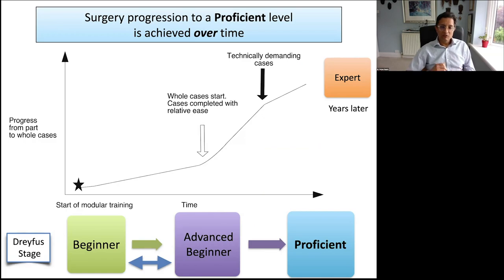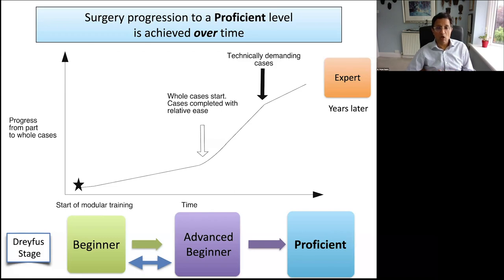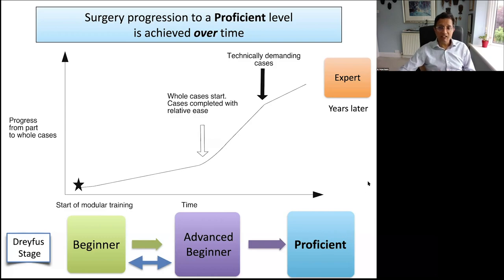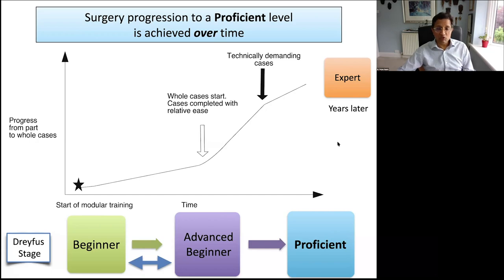It's important to realise where you are in your training. There is the novice who's never done surgery; the beginner who can do various parts but can't do a whole operation; the advanced beginner who can do a whole operation but must cherry-pick routine cases. They progress to proficiency — doing a variety of techniques, hard or soft cataracts, small or large pupil — and eventually to expert, where you can create new techniques, seemingly not even concentrating during the operation.